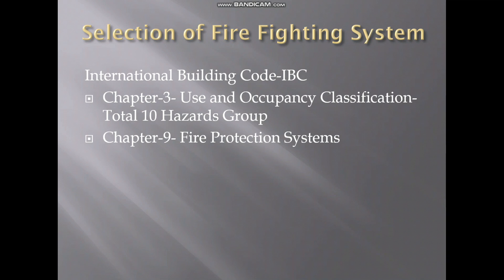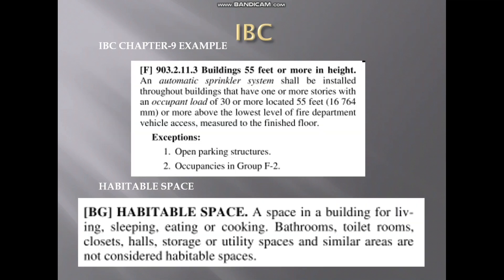For example, IBC chapter 9 defines that we need to provide an automatic sprinkler system if the building height is 55 feet or more. So the first step of this exercise is to identify the building's habitable height.